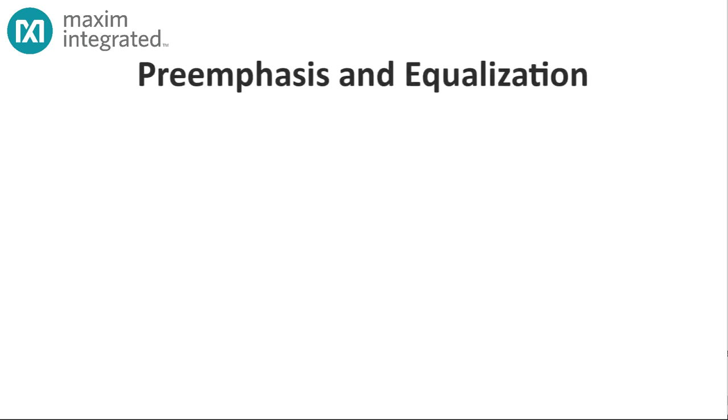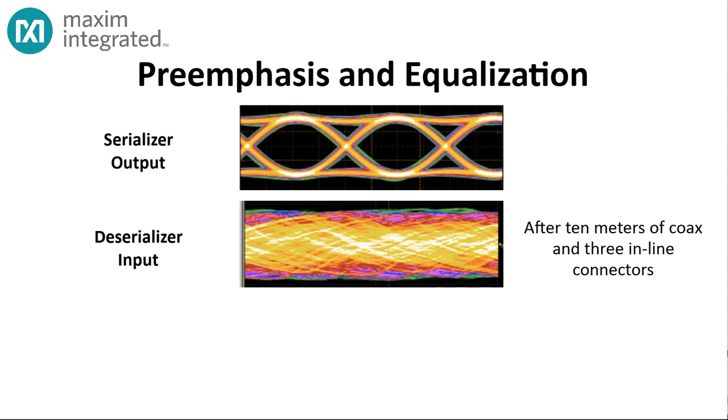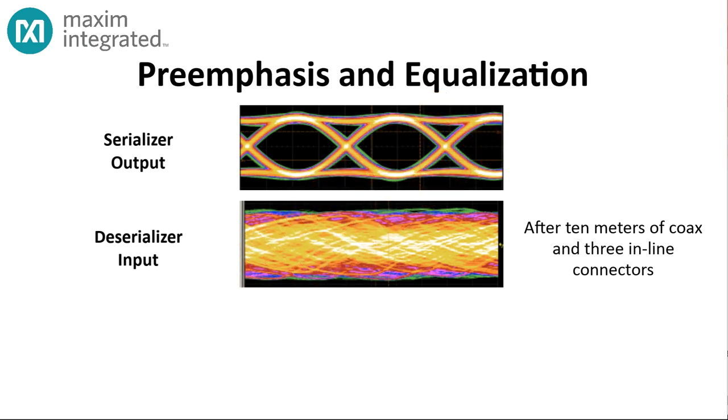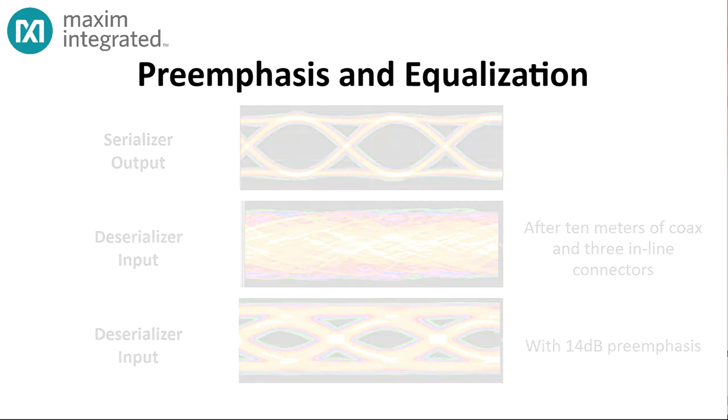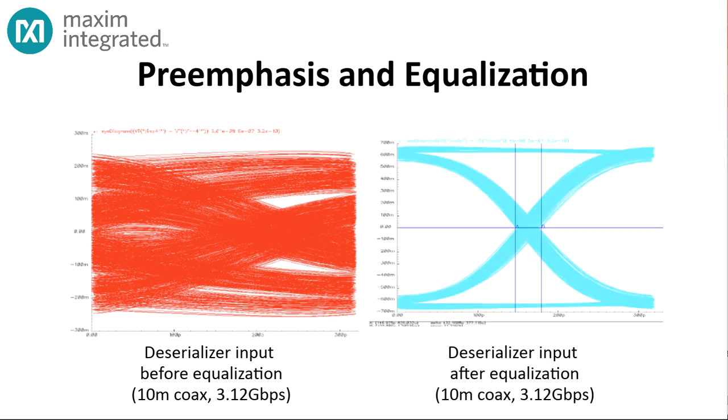In any event, chances are that beautiful, pristine signal that you transmit will be something of a mess when it gets to the receiver. But Maxim has you covered there too. All of Maxim's serializers have programmable pre-emphasis that boosts the frequencies most often lost along the way so that the received signal has a better chance to be recoverable. And all of Maxim's deserializers have programmable equalization that further helps to fix some of the frequency-based effects that occur along the cable.